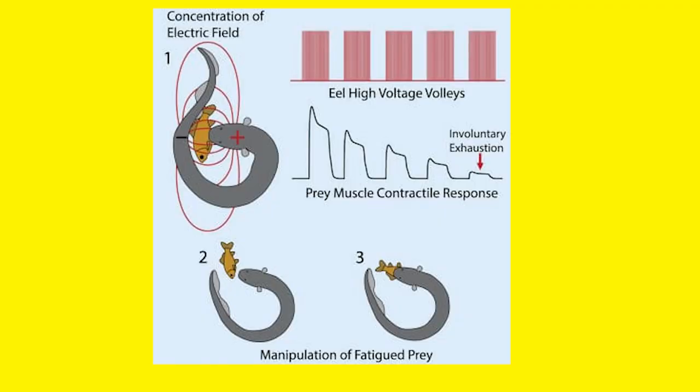Eels send out high-voltage pulses, which twitches the prey's muscles involuntarily. Then the eel attacks again and stuns the prey. Then, dinner time.